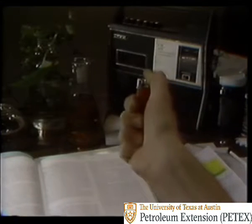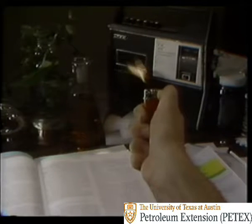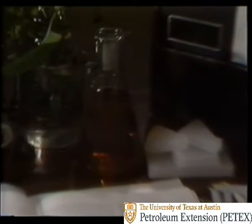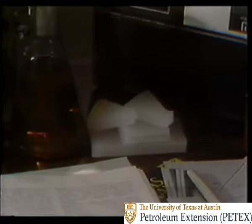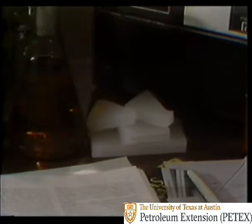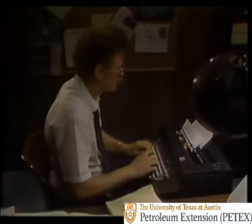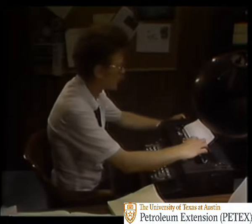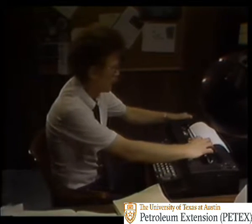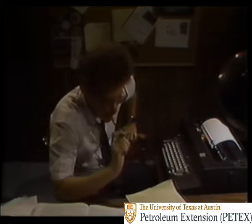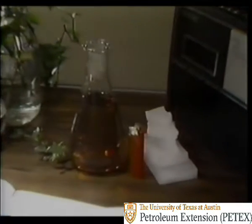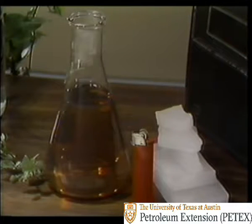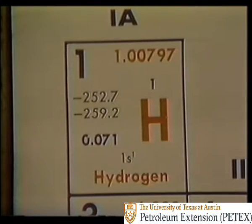We find hydrocarbons in different forms like gases, liquids, and even solids like paraffin — things we call petroleum. An element is the basic building block or component of any substance, and the substance we call petroleum is mainly a combination of two elements: hydrogen and carbon.